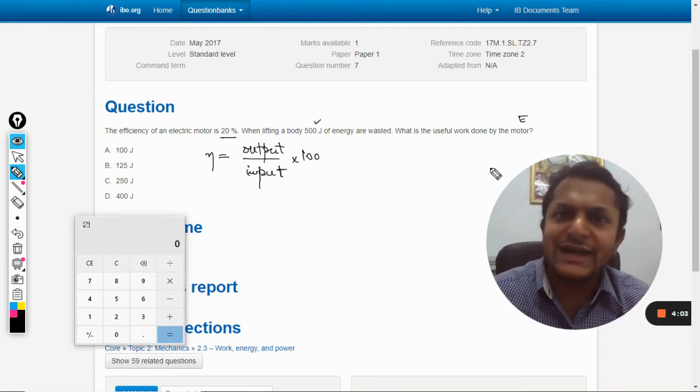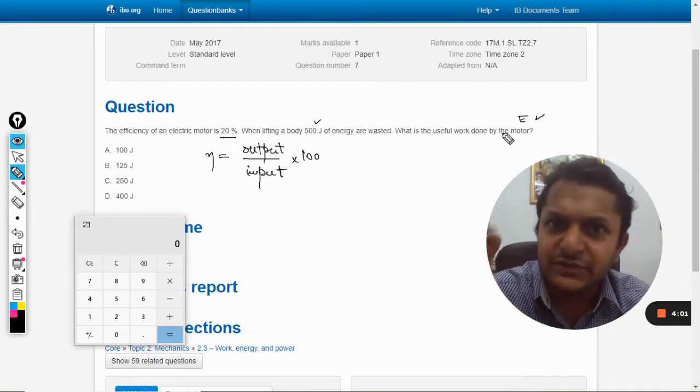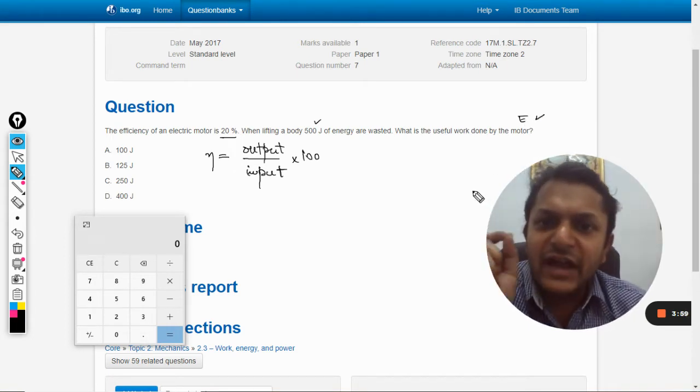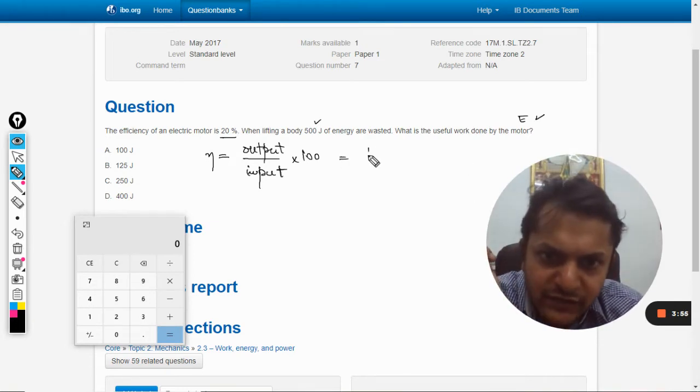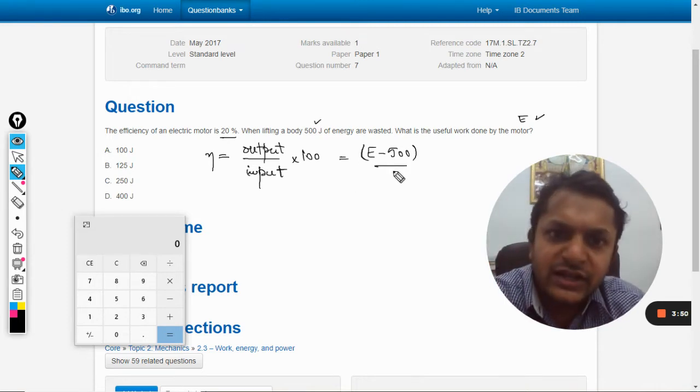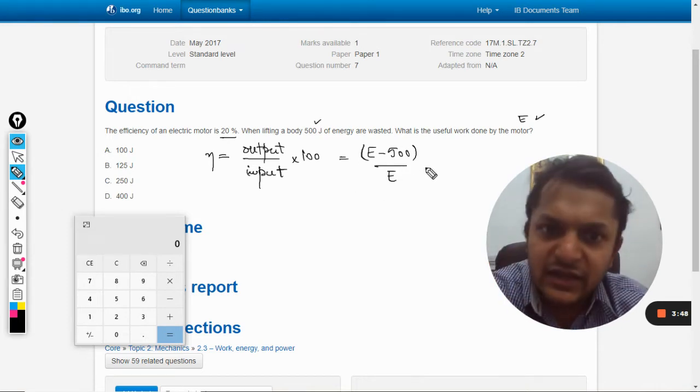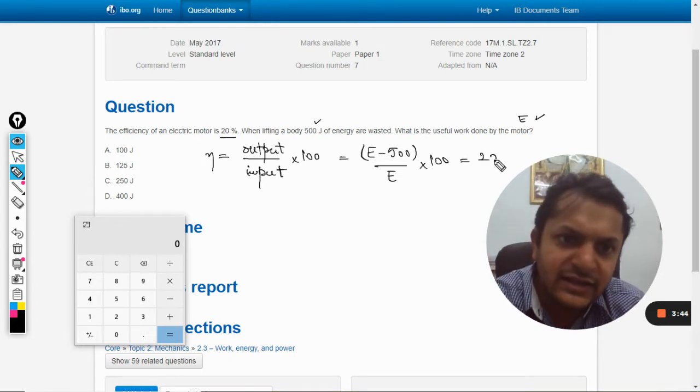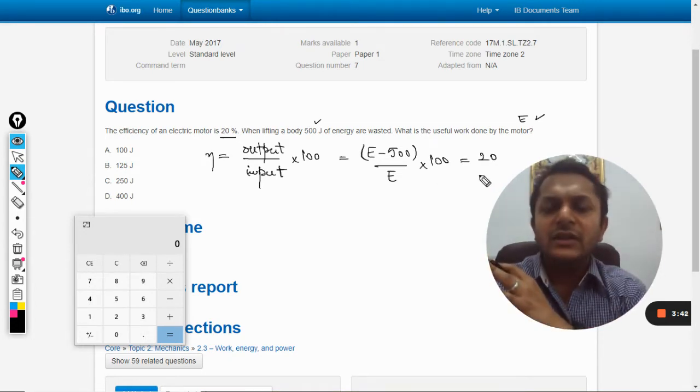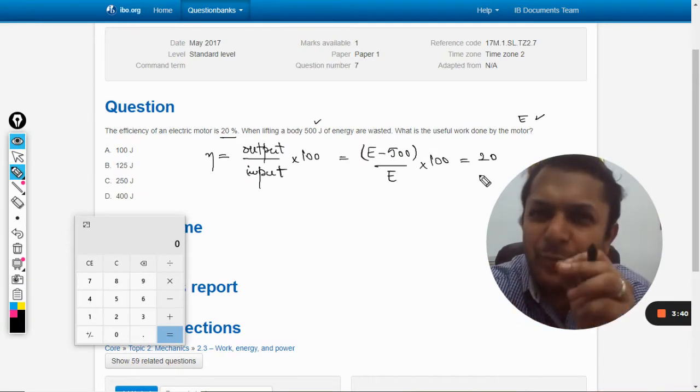Now let us assume that the motor has a total input of energy E, and 500 joules of energy is wasted out of it. So it will be E minus 500, this is the output, divided by input which is E, into 100, should be the efficiency. And this efficiency will be 20.